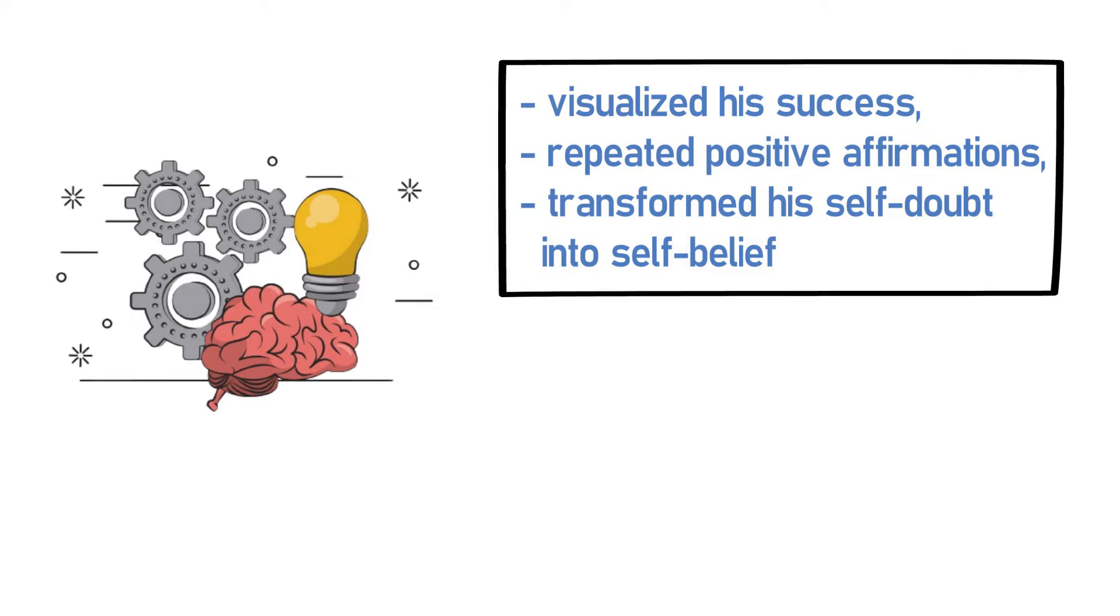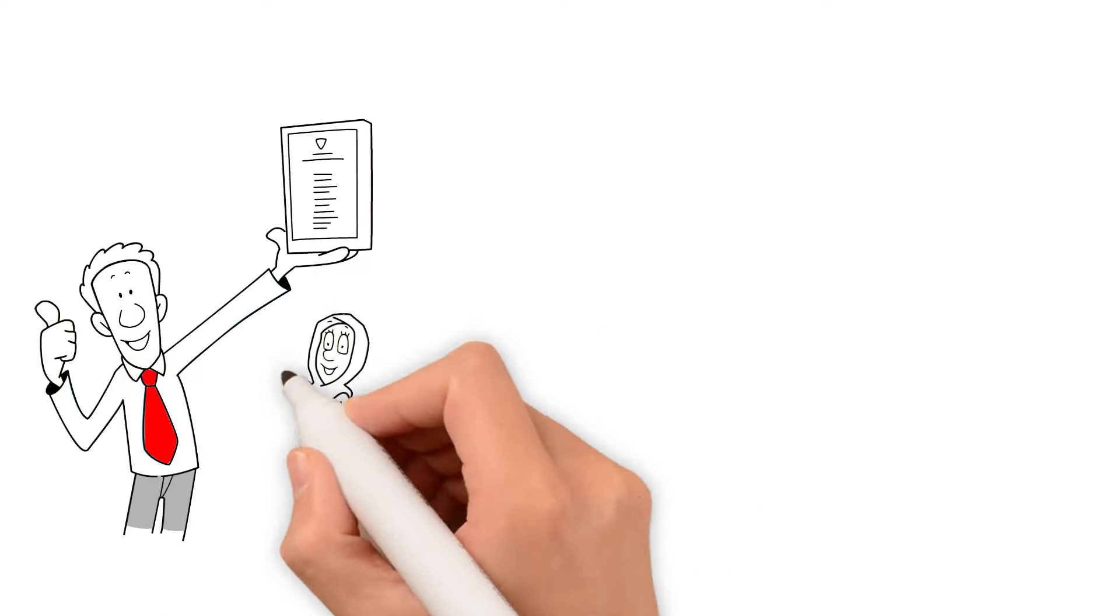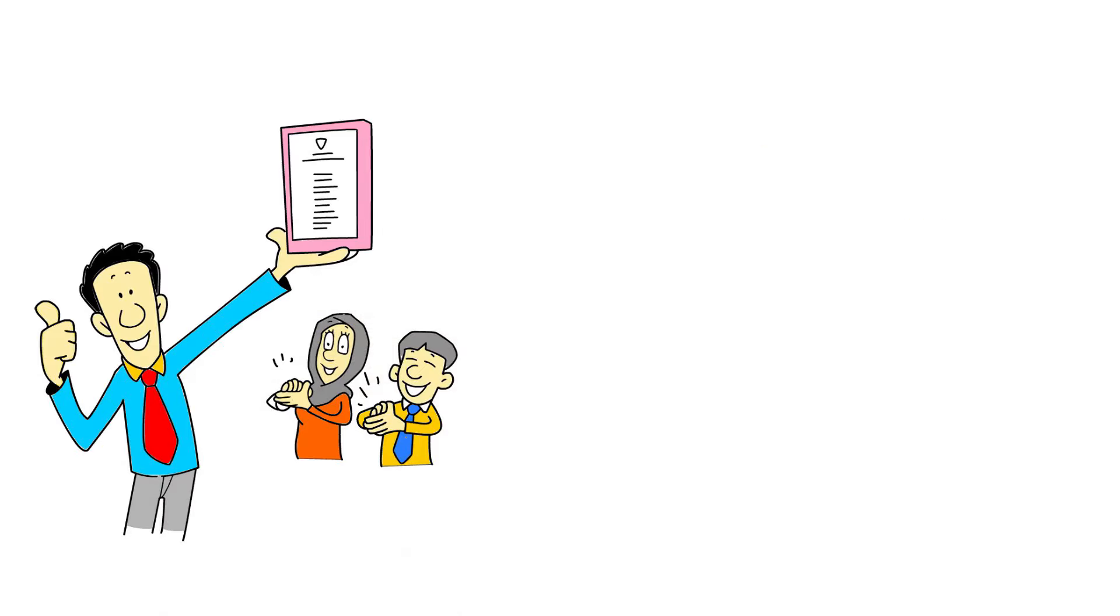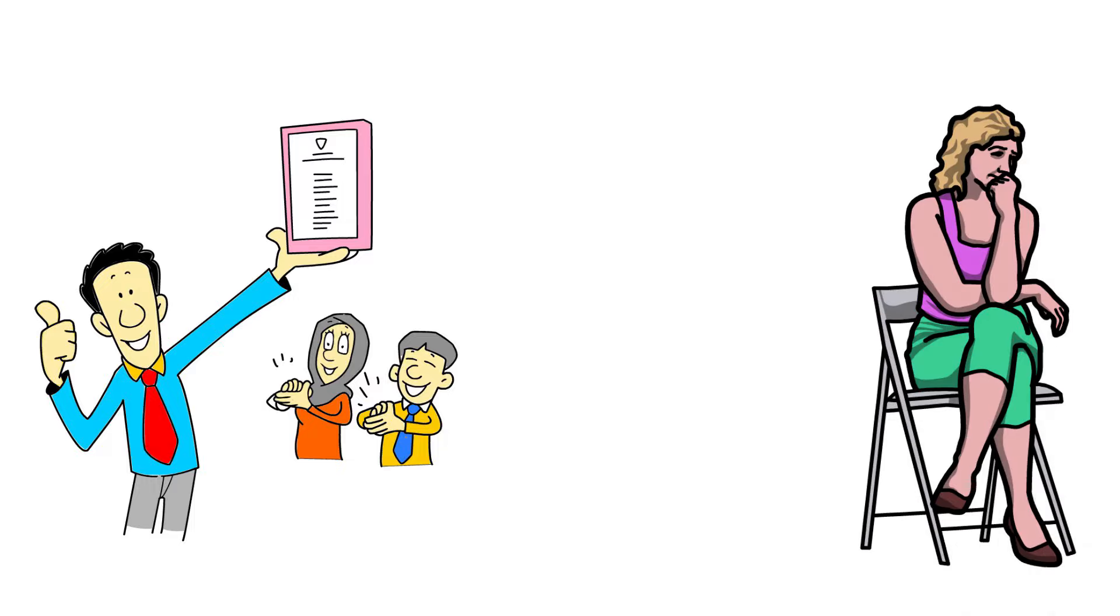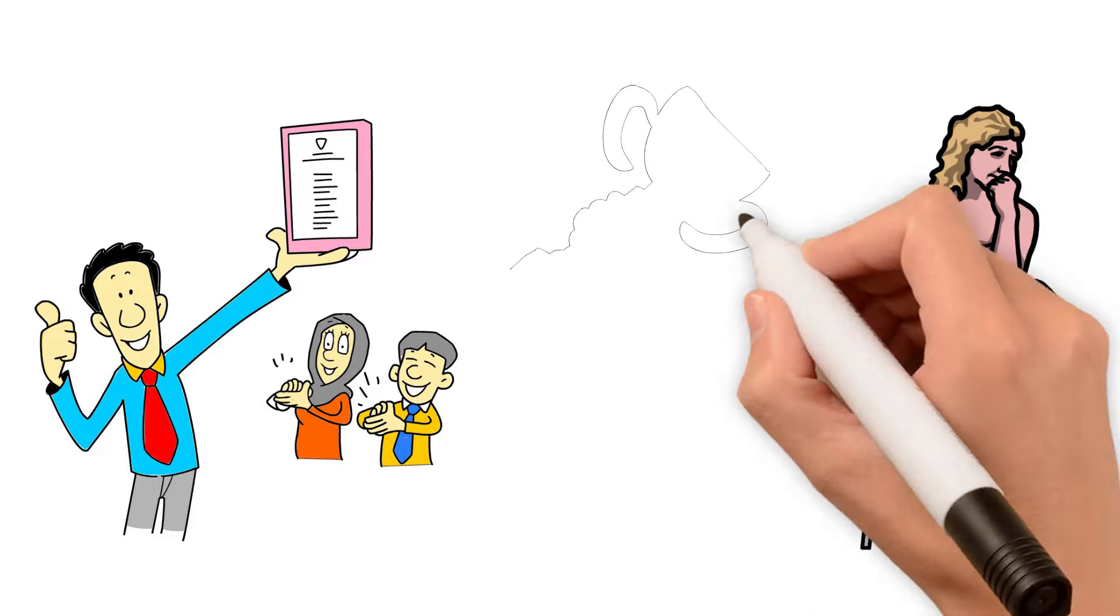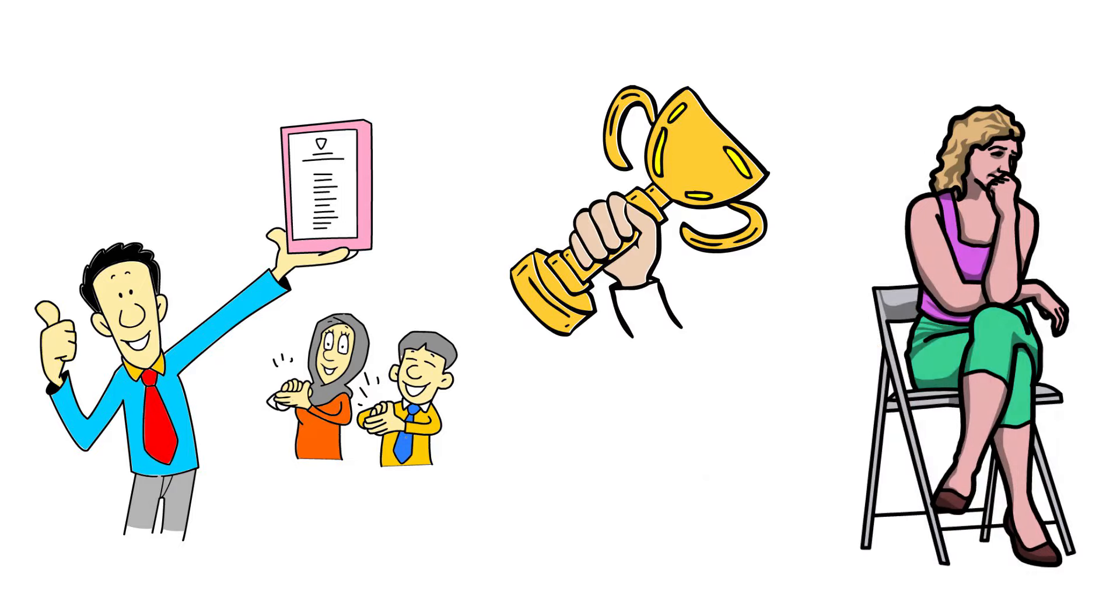Each of these stories shares a common theme, the transformative power of the mind. By harnessing this power, ordinary people achieved extraordinary things. Reflect on these stories. Think about how you too can apply these principles to overcome your challenges and achieve your own success.